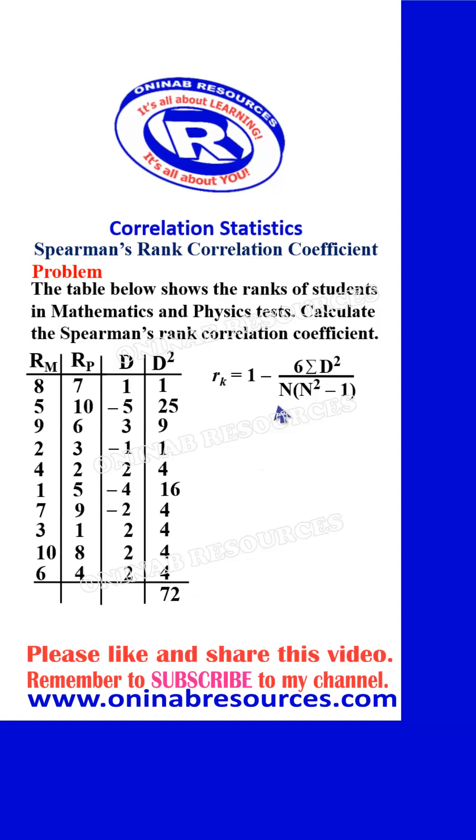Substituting into the formula, the Spearman's rank correlation coefficient will be 1 minus 6 multiplied by 72, since the sigma d squared is 72, divided by our n is 10, because we have 10 students that took part in the two tests. So that's going to give us 10 into 10 squared minus 1.